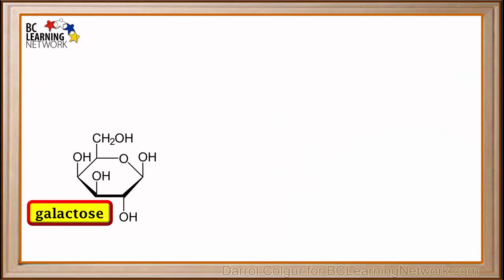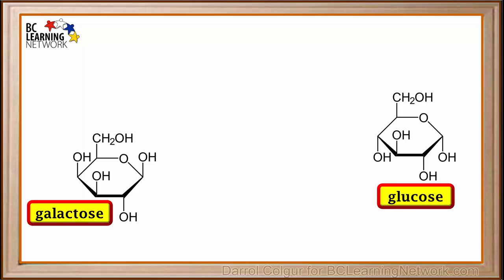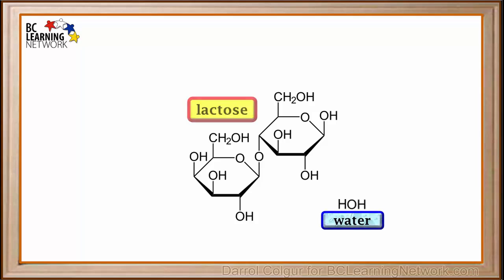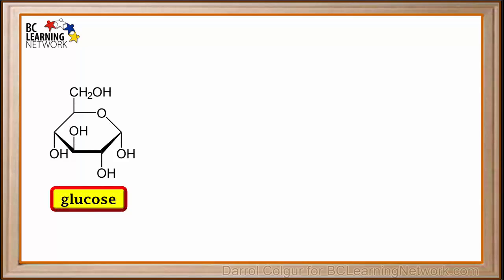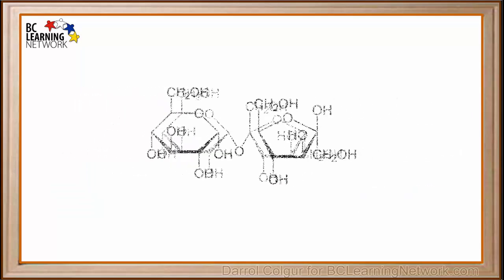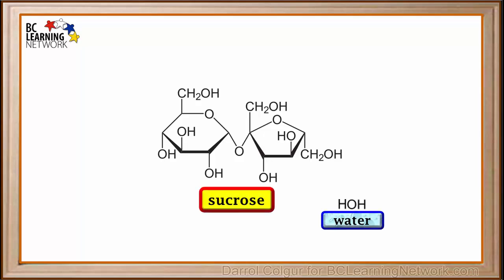Another disaccharide is formed when a molecule of galactose and a molecule of glucose bond to each other in a dehydration synthesis to form lactose. Lactose is a common disaccharide found in milk products. Still another disaccharide is formed when a molecule of glucose and a molecule of fructose bond to each other with a dehydration synthesis to form sucrose, a common disaccharide found in table sugar.